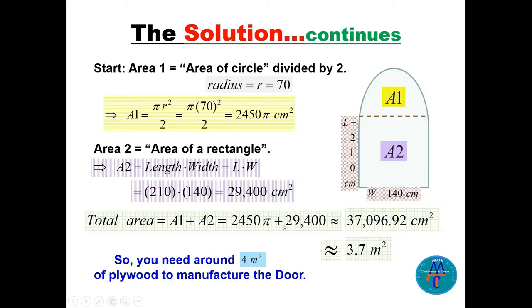You need the calculator and use π = 3.1416, and then the answer will be 37,096.92 cm².